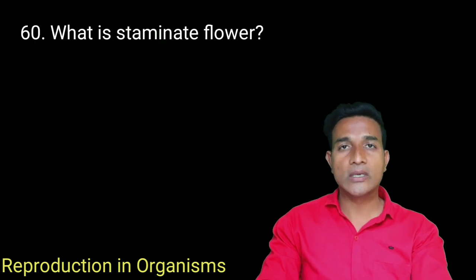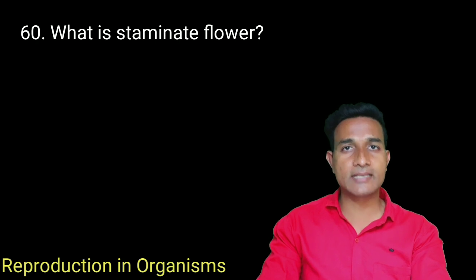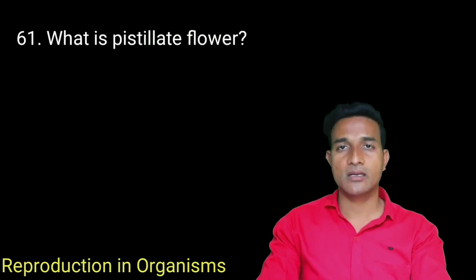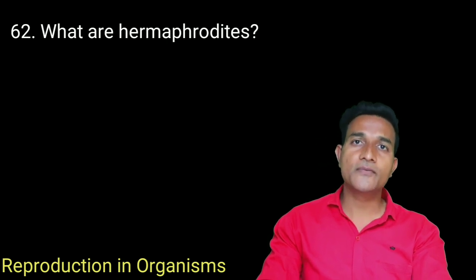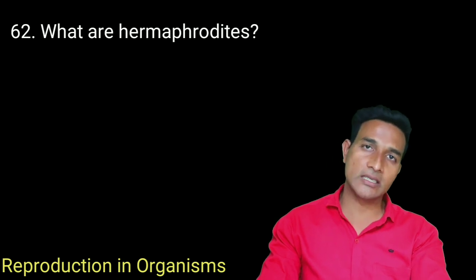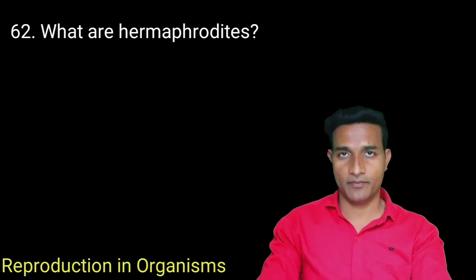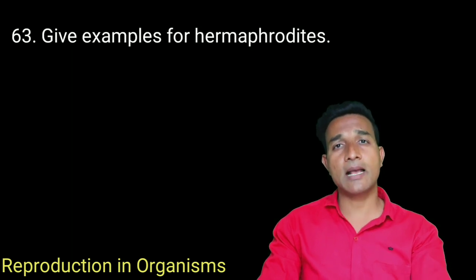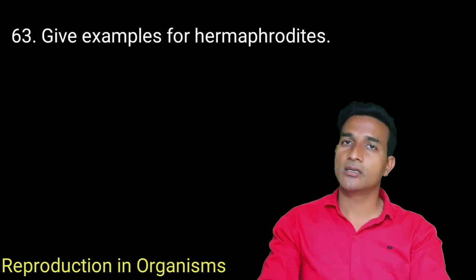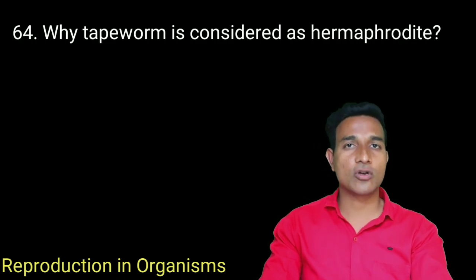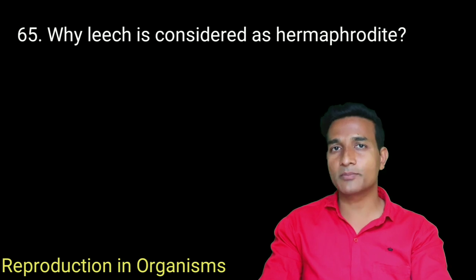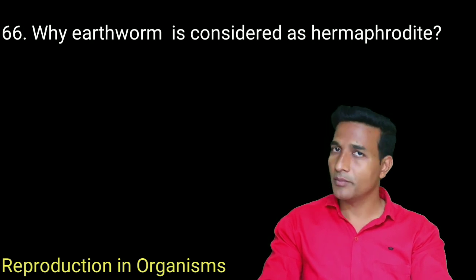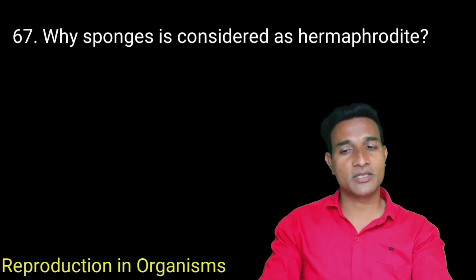What is a staminate flower? The flower with only stamen is called a staminate flower. What is a pistillate flower? Flowers with only pistil are called pistillate flowers. What are hermaphrodites? If an animal possesses both male and female reproductive organs in the same body, it is called a hermaphrodite. Examples: earthworms, leech, tapeworm, and sponges — all have both male and female sex organs present on the same body.